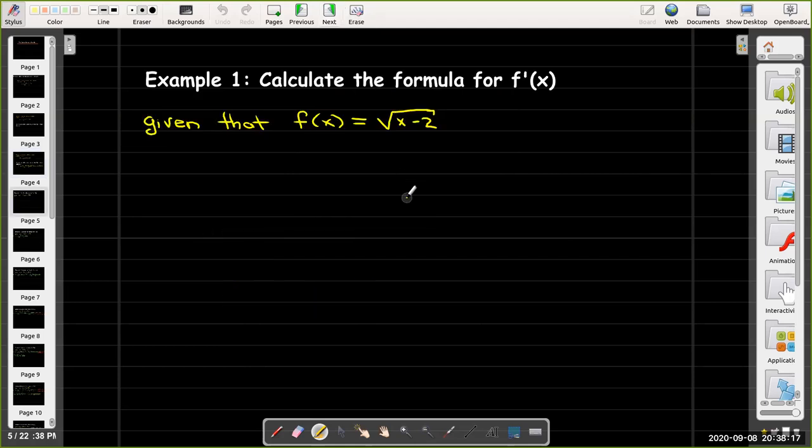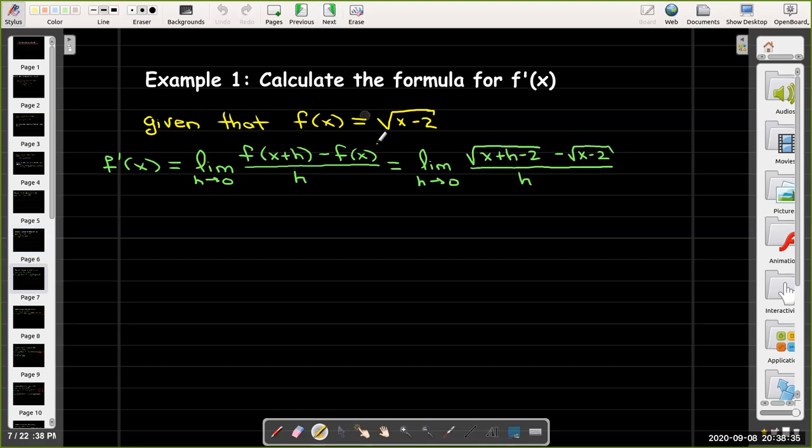So here's an example. Suppose we want to calculate the formula for the function f prime of x, given that f of x is radical x minus 2. So we'll start with the definition and go ahead and use our function definition.